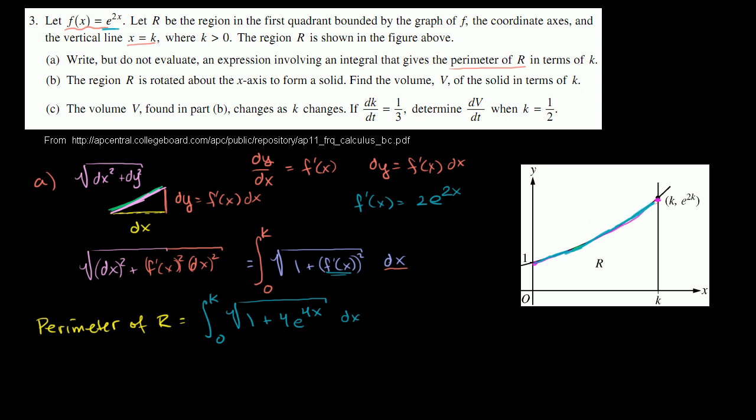And now we just have to get the rest of the perimeter. So you have this little segment right over here. That's length 1. We're going from 1 to 0 or 0 to 1. So plus 1. Then you have this part right along the x-axis. Well, that's going to be of length k, plus k. And then finally, you have this height right over here. And that's going to be of length f(k), or e to the 2k. Plus e to the 2k. And we're done. We found the perimeter of R, and we don't have to evaluate it. So we're done with this part.